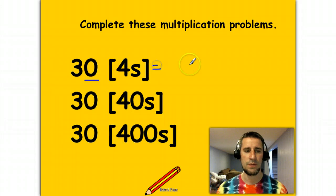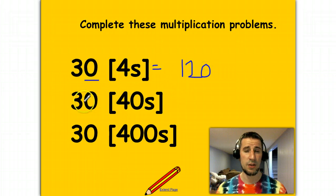Same thing with if I took 30 times 40s. Notice the only difference is that we're taking these two zeros. Well, keep your 12 but then slap your two zeros on the bottom.